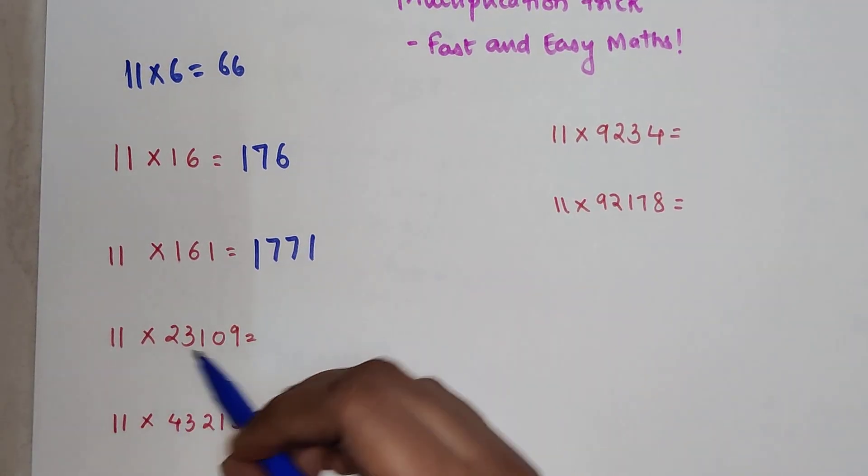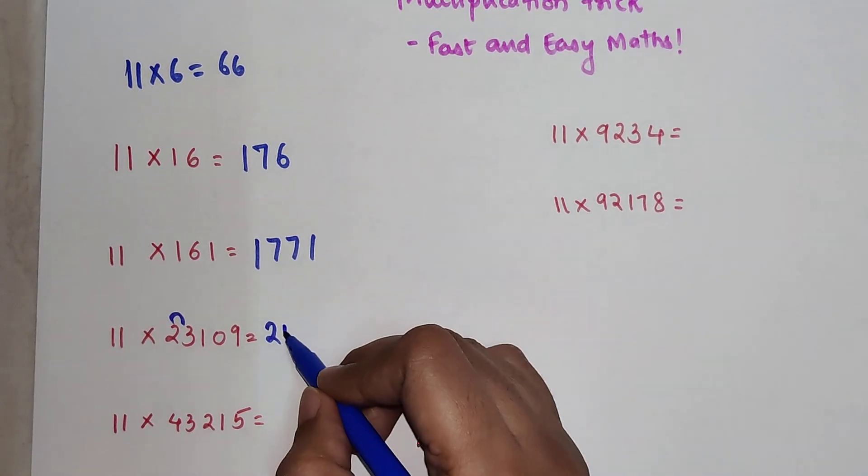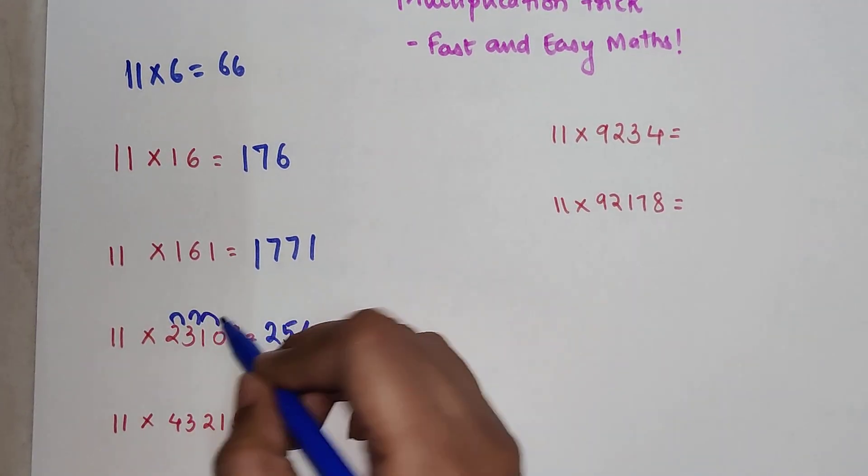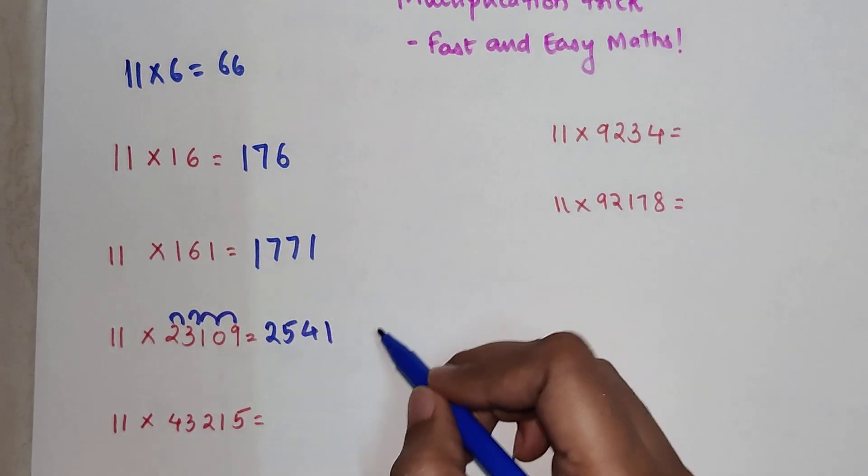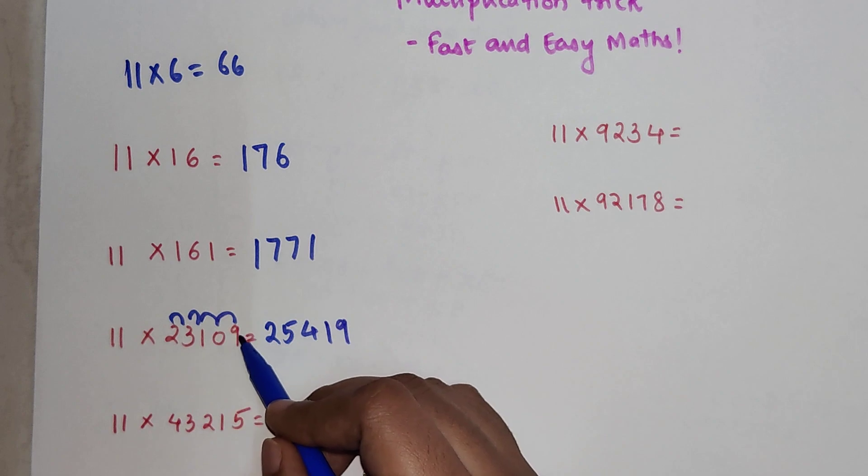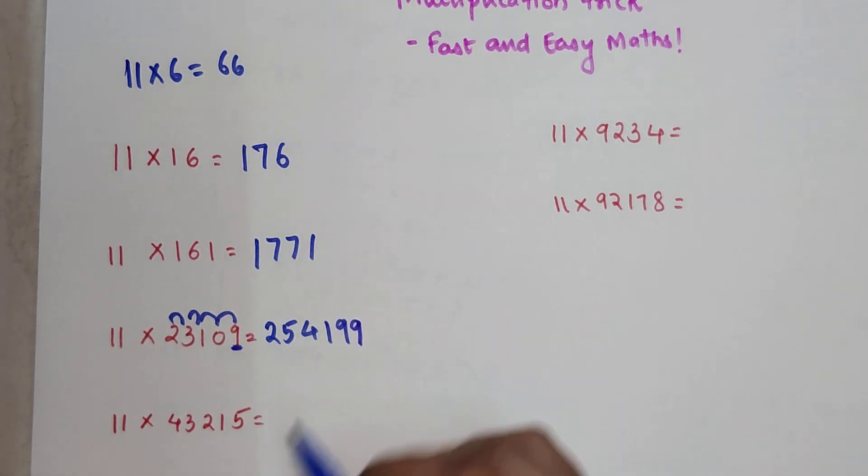So now for 11 into 23109, it would be 2, then 2 plus 3 is 5, then 3 plus 1 is 4, 1 plus 0 is 1, 0 plus 9 is 9. Now understand, 0 plus 9 is 9, but this 9 was still left, so your final answer will have one more 9.